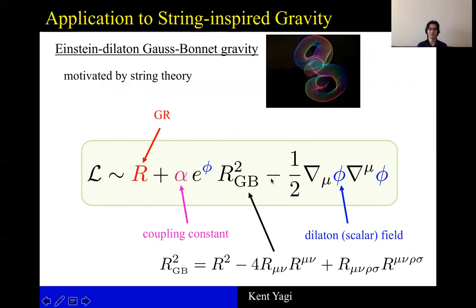In this theory, there's a scalar field called dilaton, whose kinetic term is in this last term. And there is a coupling between the scalar field and the metric through this second term. This R_GB squared is a certain curvature squared combination. And the coupling between scalar field and metric is controlled by the coupling constant alpha. If you set this alpha to zero, then you reduce to GR.